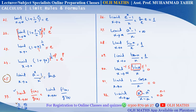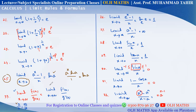Apply L'Hôpital's rule. Derivative of (a^x − 1) is a^x · natural log of a. Derivative of 1 is 0, derivative of x is 1. Now put the limit x approaches 0: a raised to power 0 is 1. So the answer is natural log of a.